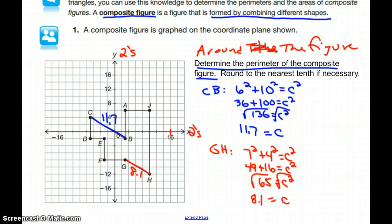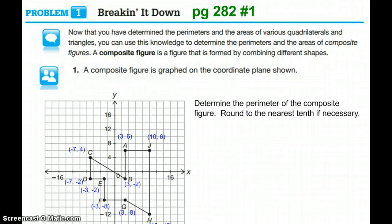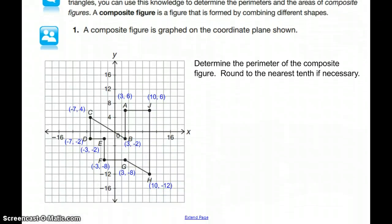Another method that you could do—taking a little tangent here—instead of using the Pythagorean theorem, you could also use the distance formula. I'm going to do that just for CB as an example. You could do the same thing with GH.